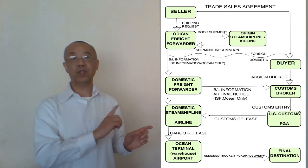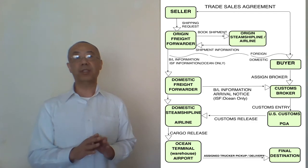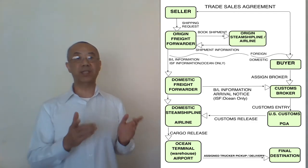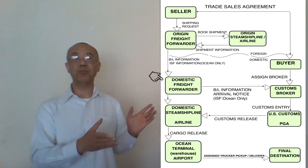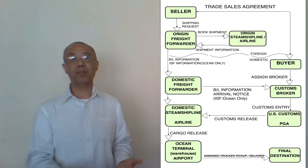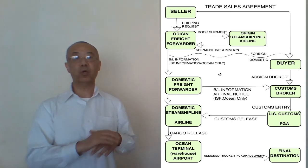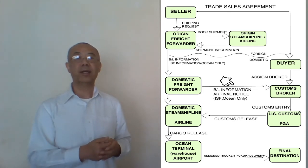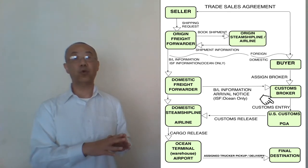During the vessel's transit on the ocean, the destination freight forwarder will receive the shipment information prior to the arrival date from the steamship line. That is called an arrival notice. The US domestic buyer's customs broker will receive the arrival notice from the US freight forwarder and start to make an entry for clearing customs.